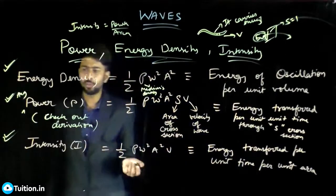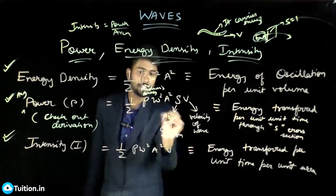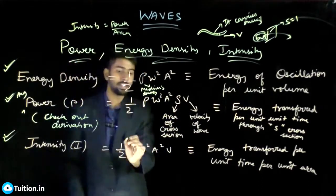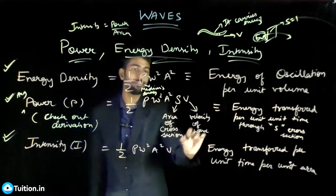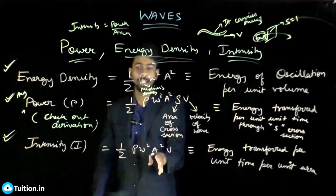And then further what you have to do? You have the average power through an area S. Just divide that with S. Just divide this equation by S, you will get the intensity. Half rho omega square a square v. You do not have an S here because you want power transferred per unit cross sectional area.